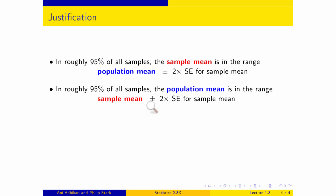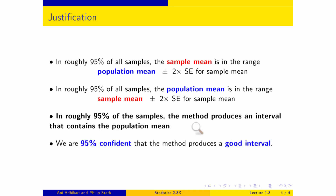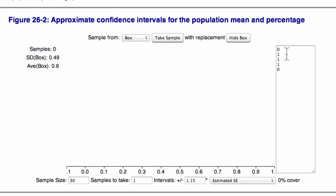Start at the sample mean, go two standard errors on either side, and what this tells you is that in roughly 95% of all samples, this method will give you an interval that contains the population mean. That is the formal definition: we are 95% confident that the method produces a good interval. The confidence is in the method — 95% of the time, it gets the answer right. To check this out, we're going to use one of the wonderful applets in your textbook. Here is figure 26.2 of your text. They're taking a box with two zeros and three ones — a population where the percent of ones is 0.6. The average of the box is 0.6, the SD of the box is 0.49, which is the square root of 0.6 times 0.4.